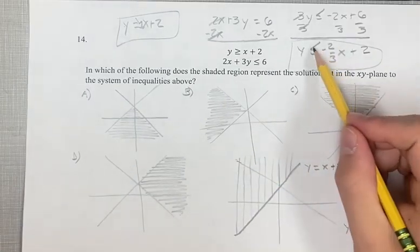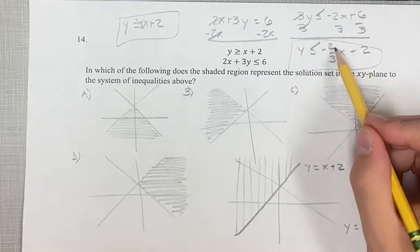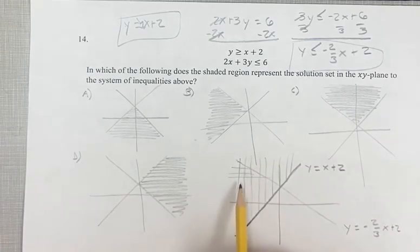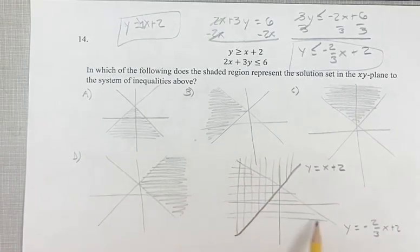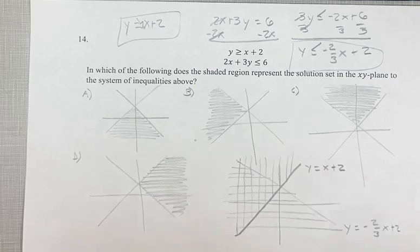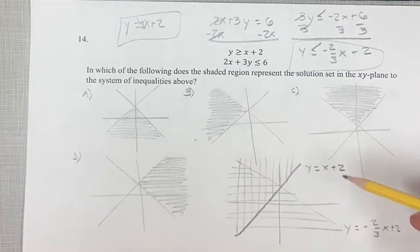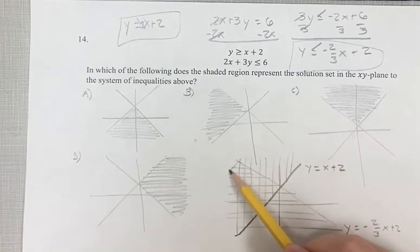For this one, we're looking for y values less than the line. So that's this line, and it's going to be everything underneath it. The solution to the system is going to be where we have a crosshatch, where both solutions are coinciding. That's going to be this section right here.